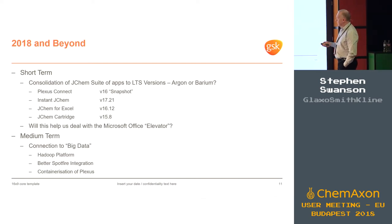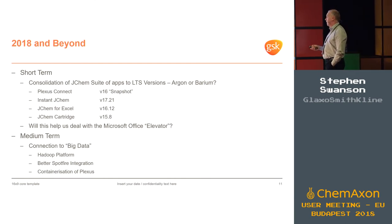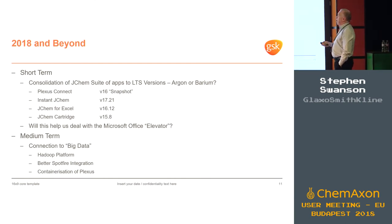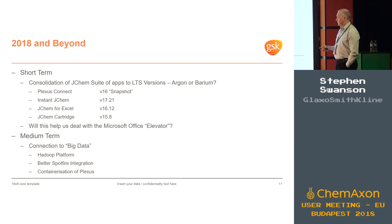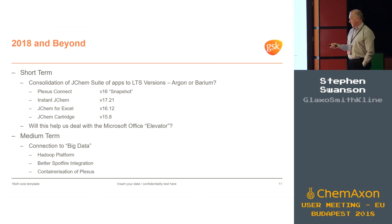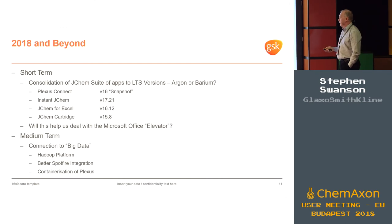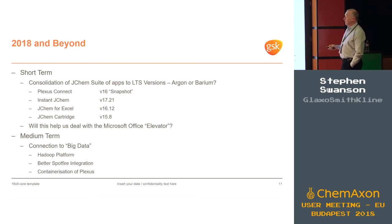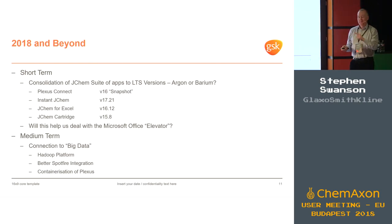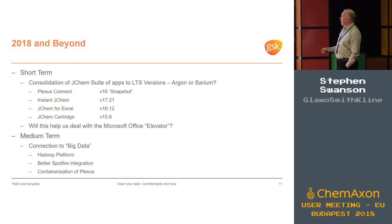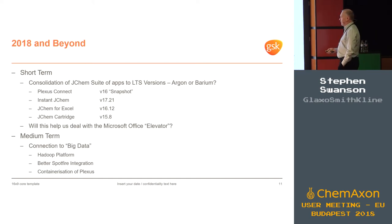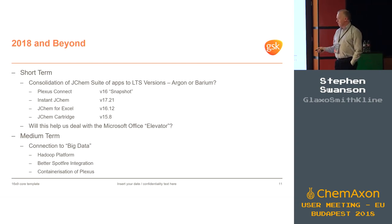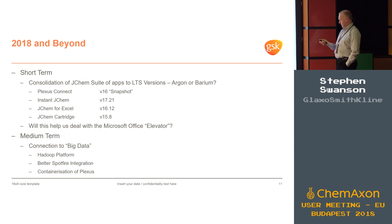Most companies are into big data and we're no exception — we've got a Hadoop platform and some of our other tools are connecting to it. So the question is why isn't Plexus Connect connecting to the Hadoop platform? We'd like to see that happening. We'd also love to see a really nice integration of Plexus Connect with Spotfire — the way I asked for it six years ago, by the way. And some of our group are into this concept of containerization, which I don't fully understand, but one of the technical people said we really should be thinking of containerizing Plexus.